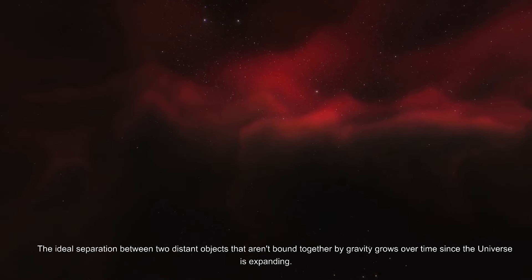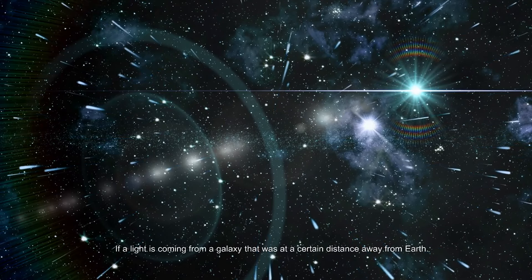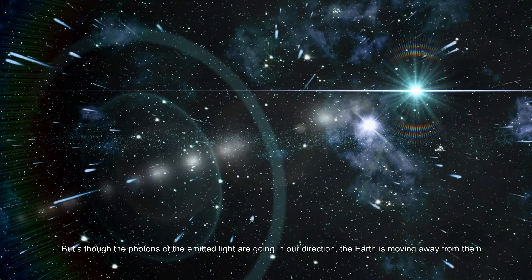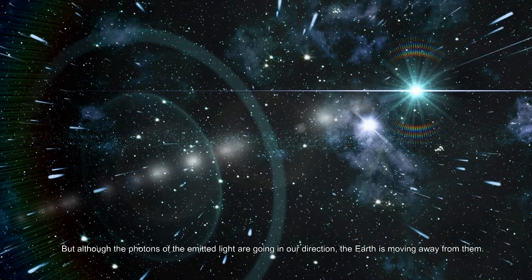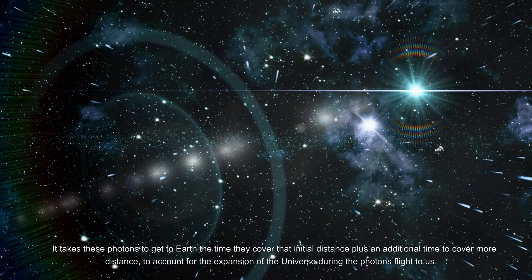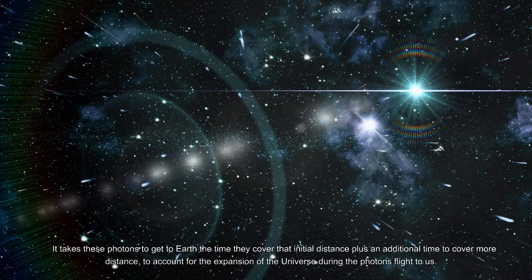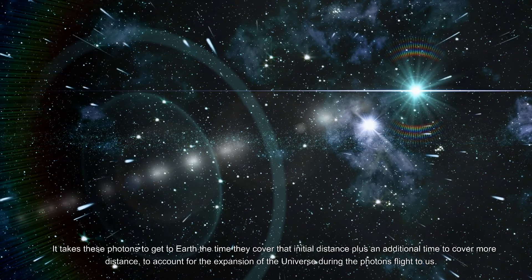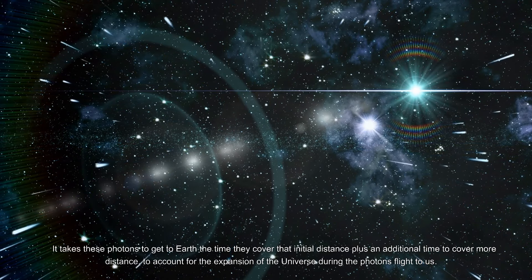The ideal separation between two distant objects that aren't bound together by gravity grows over time since the universe is expanding. If light is coming from a galaxy at a certain distance away from Earth, although the photons of the emitted light are going in our direction, Earth is moving away from them. It takes these photons time to cover that initial distance plus additional time to account for the expansion of the universe during the photons' flight to us.